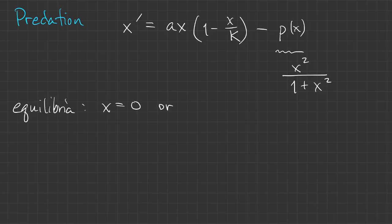This still has an equilibrium at zero. If we factor that out, then the other equilibria can be thought of as the intersection of these two functions.